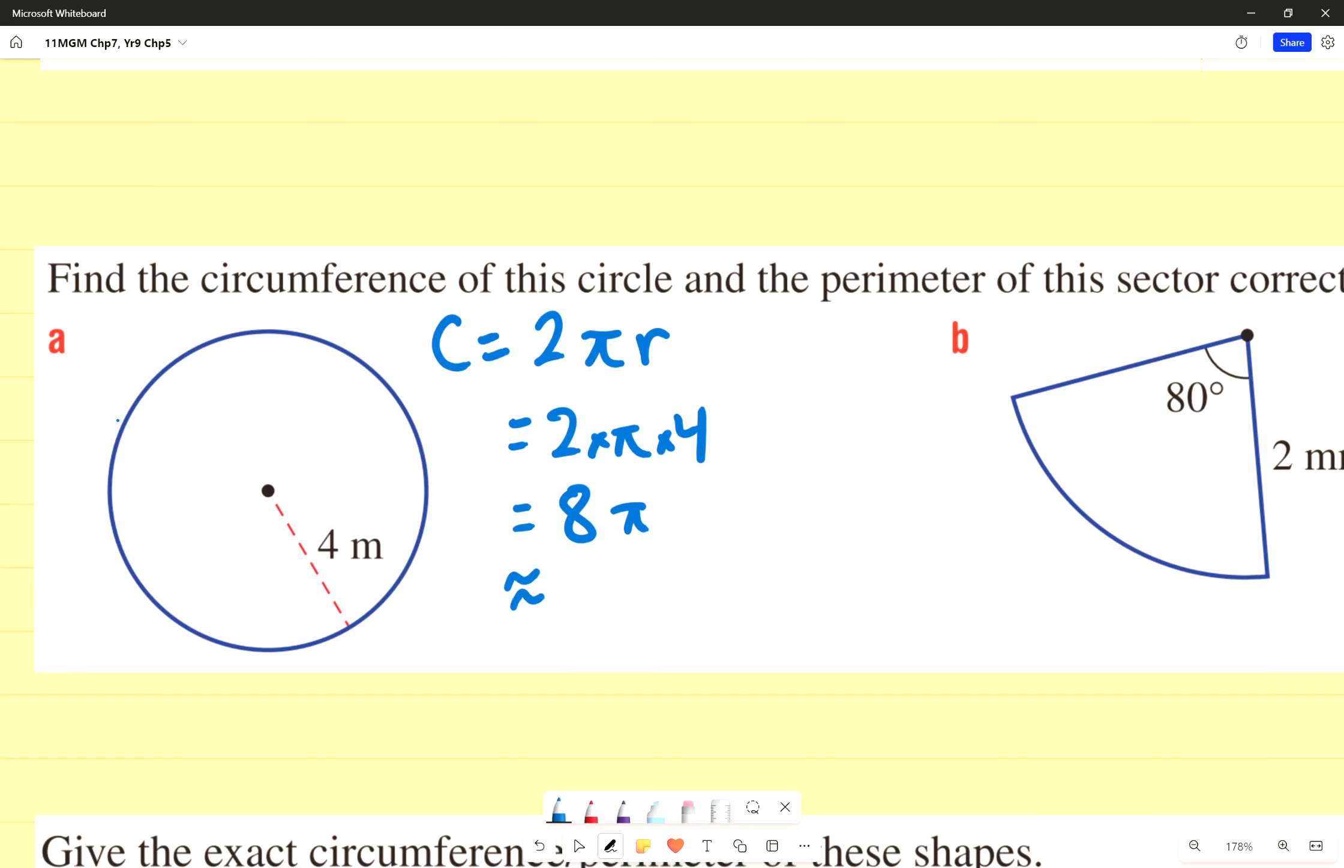And I'm going to do a little squiggly line to show it's not exactly, but approximately 25.13. And I'm going to write meters squared. That's it. Oh, not squared. What have I done wrong? Not cubed. Cube would be 3D shape.